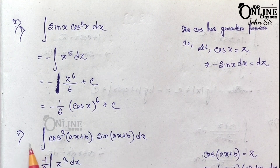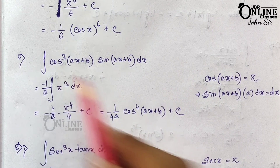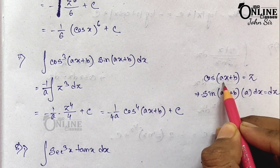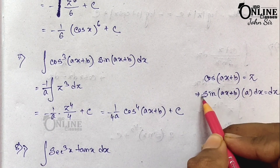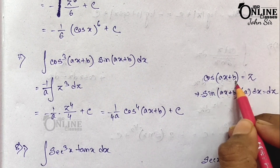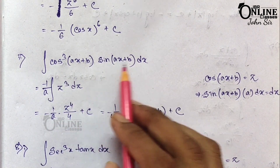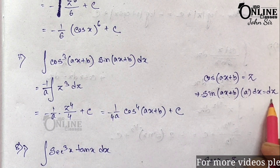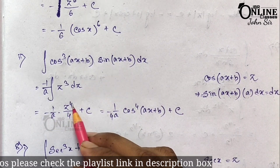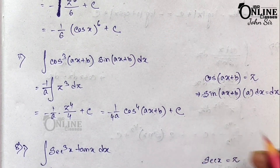Problem 7.2: ∫cos³(ax+b) · sin(ax+b) dx. Since cos has greater power, let cos(ax+b) = z. The derivative of cos(ax+b) is −sin(ax+b) · a. So sin(ax+b)dx = −dz/a. The integral becomes −(1/a)∫z³ dz = −(1/a) · z⁴/4 + C = −(1/4a)cos⁴(ax+b) + C.